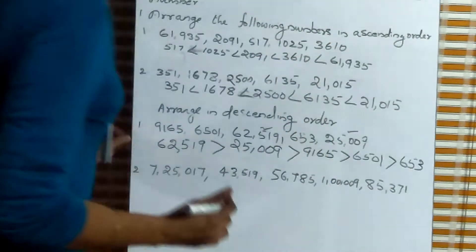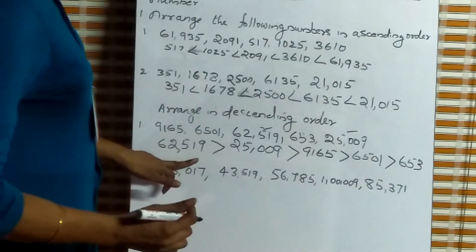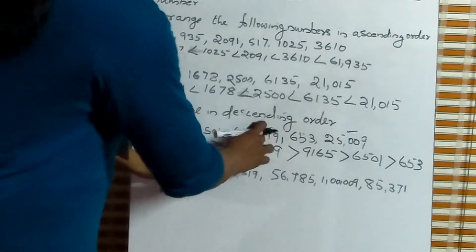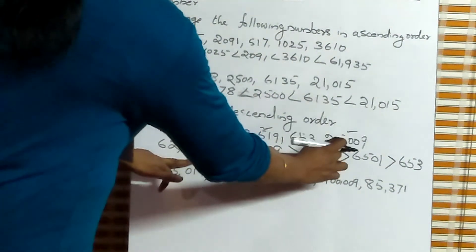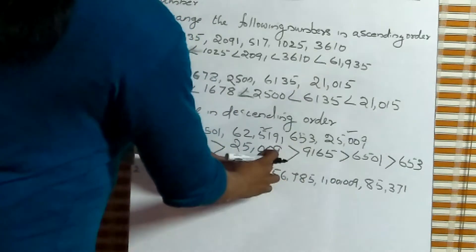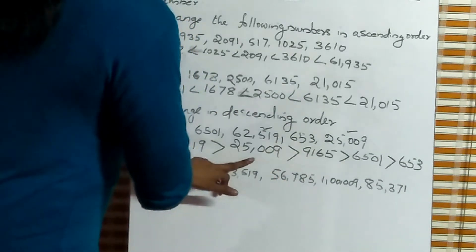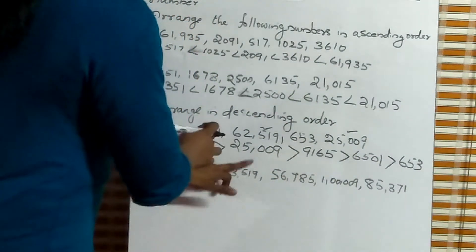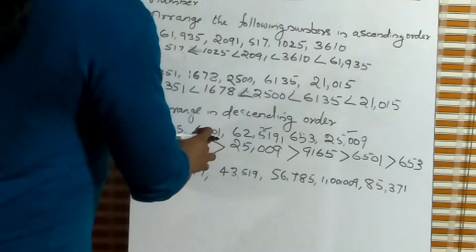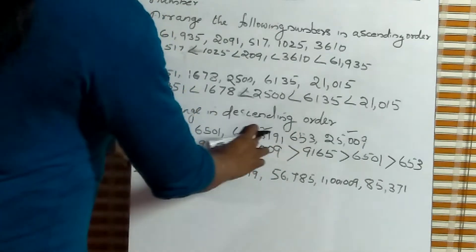Listen: 62,519 is first. Second is 25,009. Third number is 9,165. Next number is 6,501. Last number is 653.